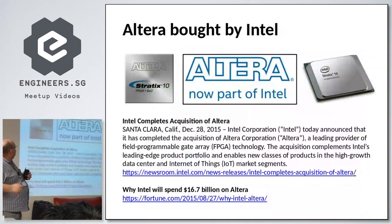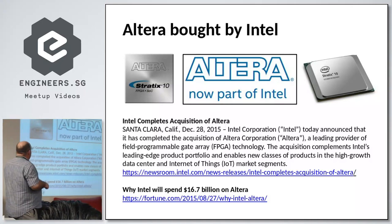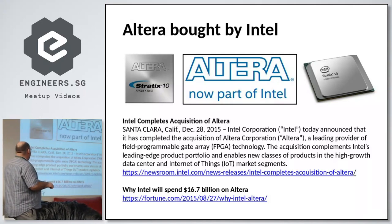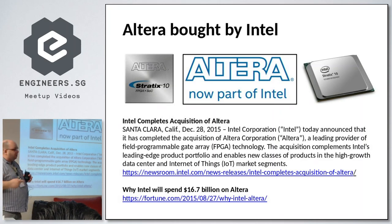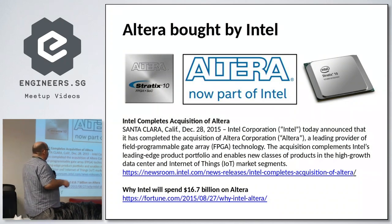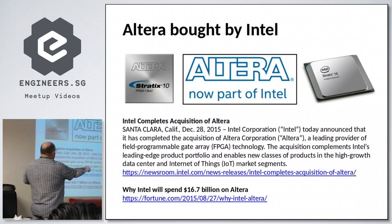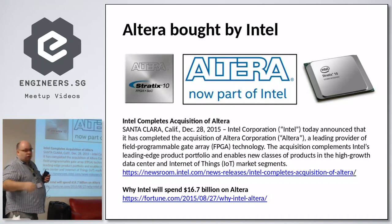As you may know, Intel bought Altera for $16.7 billion in 2015 — a big move, buying the number two in the FPGA world. Now everything is called Intel FPGA, mainly focused on IoT and data center. That's the strategic move.